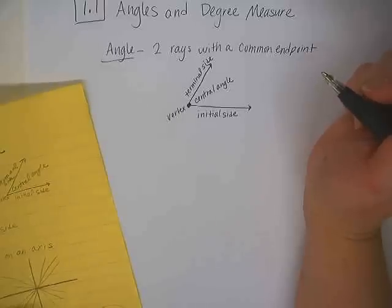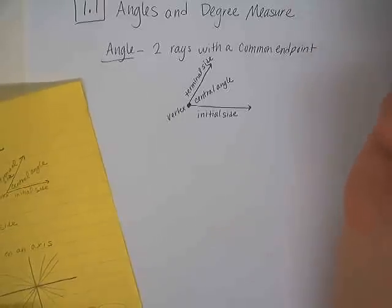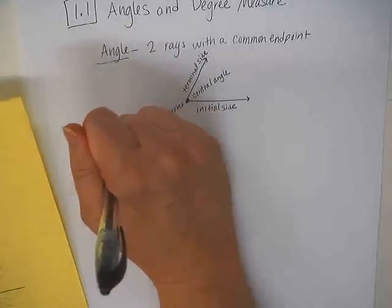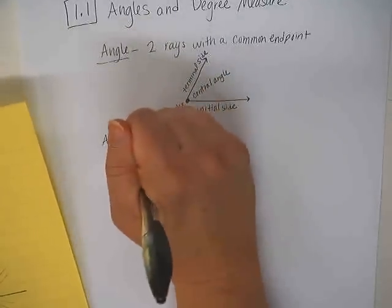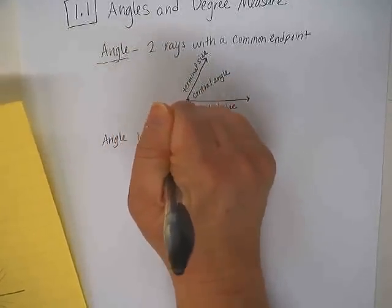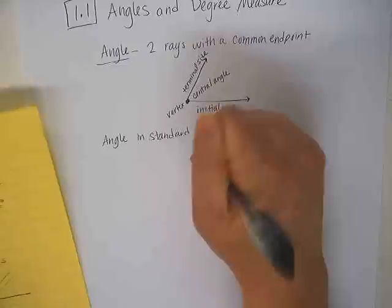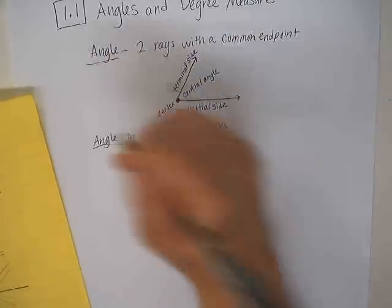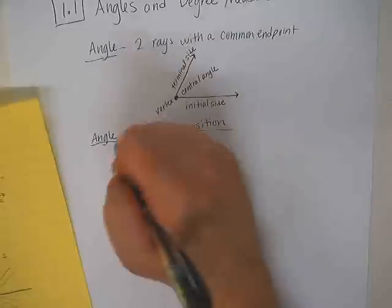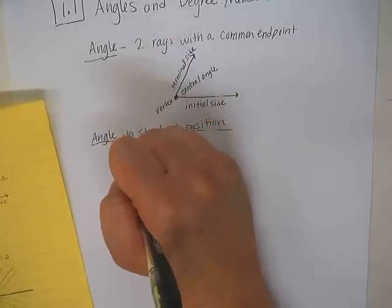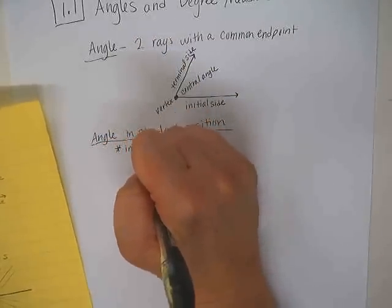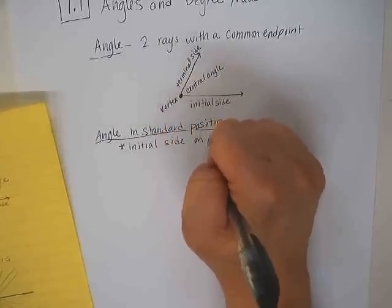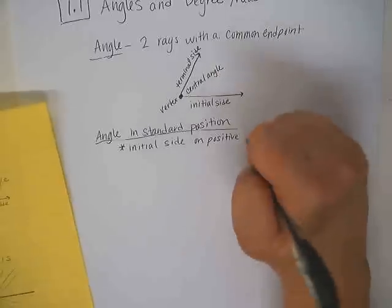The main thing we need to learn today is how to draw an angle in standard position. An angle in standard position has the initial side on the positive x-axis.